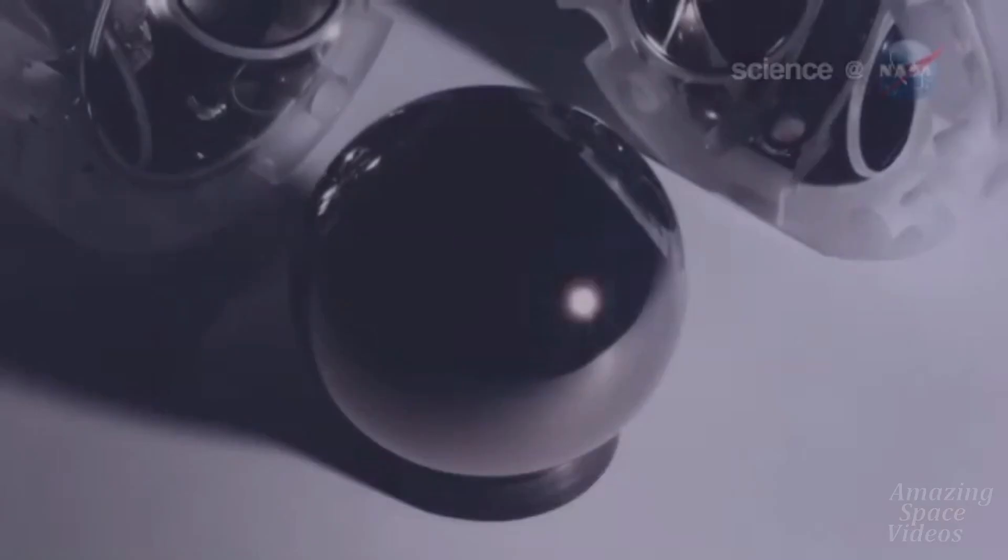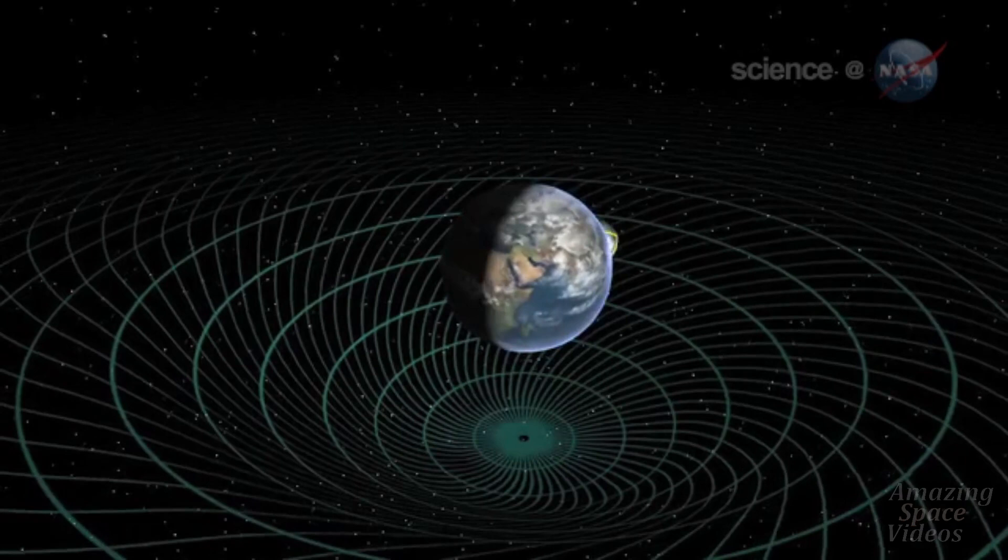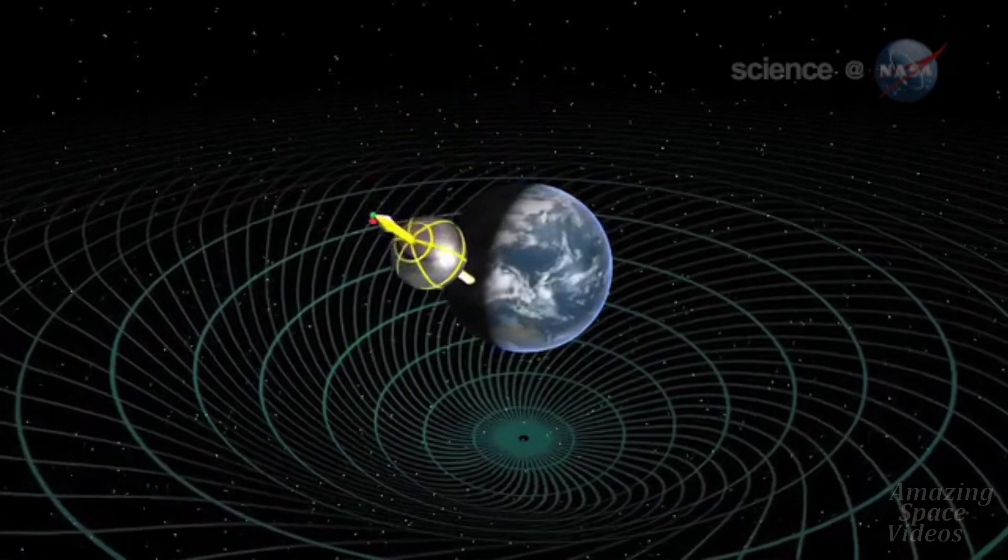Gravity Probe B carried some super-spherical gyros into Earth's orbit to see what they would do. In practice, this simple idea is extremely difficult. According to calculations, the twisted space-time around Earth should cause the axis of the gyros to drift by a tiny amount.